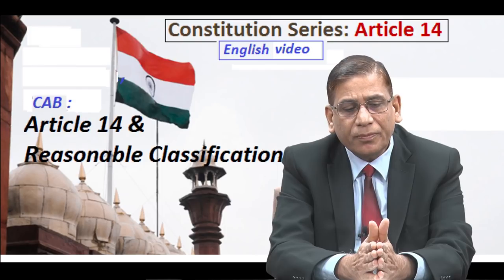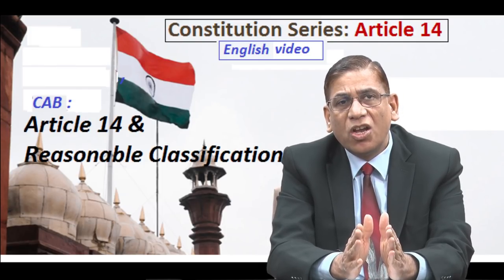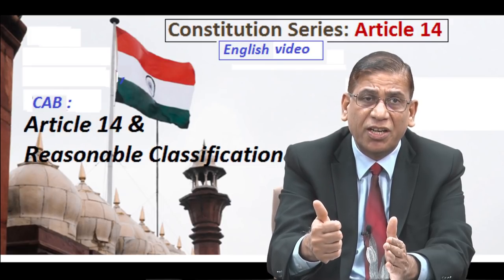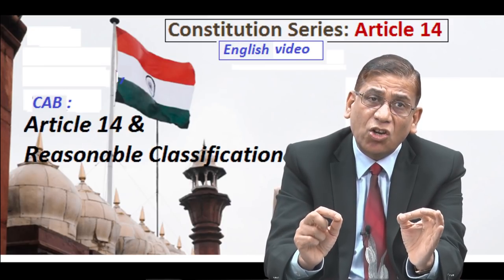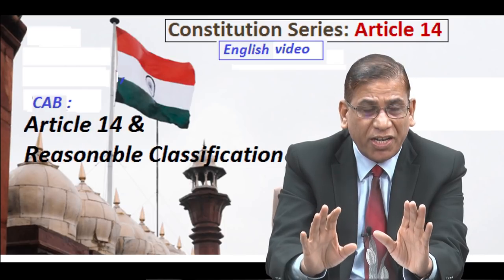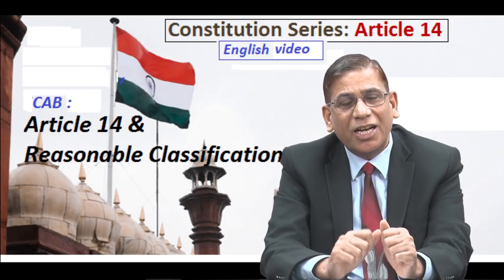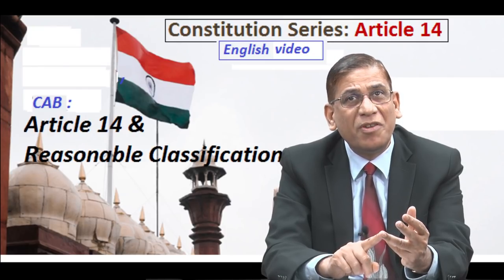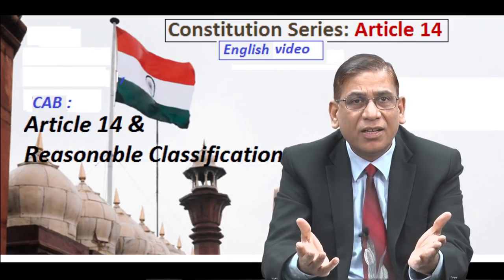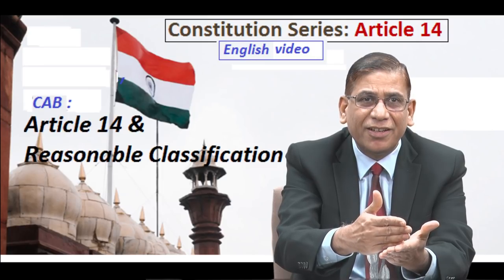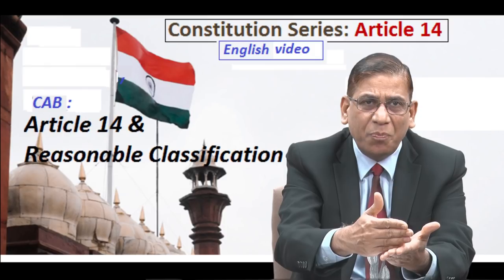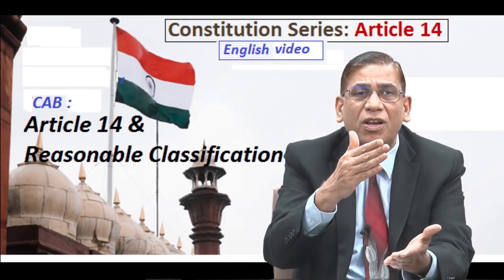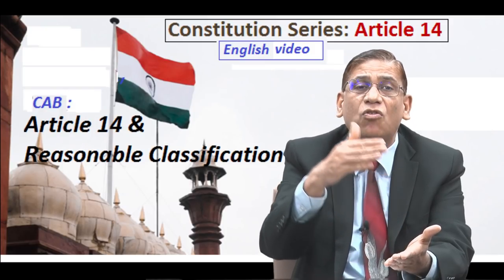I personally feel that the Citizenship Amendment Bill goes against our stated position on citizenship. We did not say we will give citizenship only on the basis of religion. We are putting a cut-off date of 31st December 2014 — but where do we get the confidence that from 1st January 2020, Pakistan, Afghanistan, and Bangladesh will not ill-treat their minorities? I think this is absurd. A particular cut-off date means we exclude people who have been and will be discriminated against after that date.